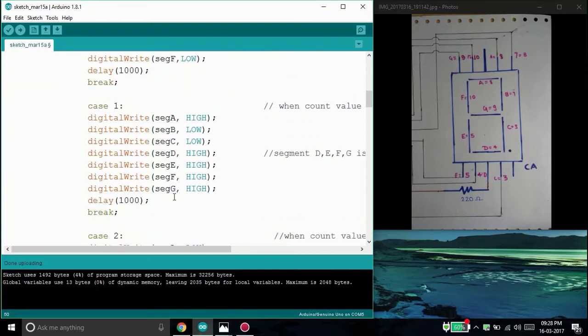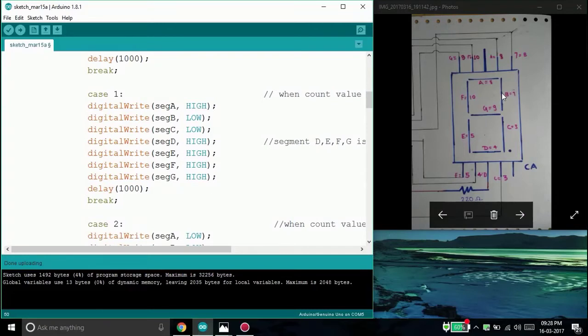Now look at 1. For glowing 1, we want segment B and segment C to glow and all the segments to be turned off. That's why segment A, segment D, E, F, G are given high.